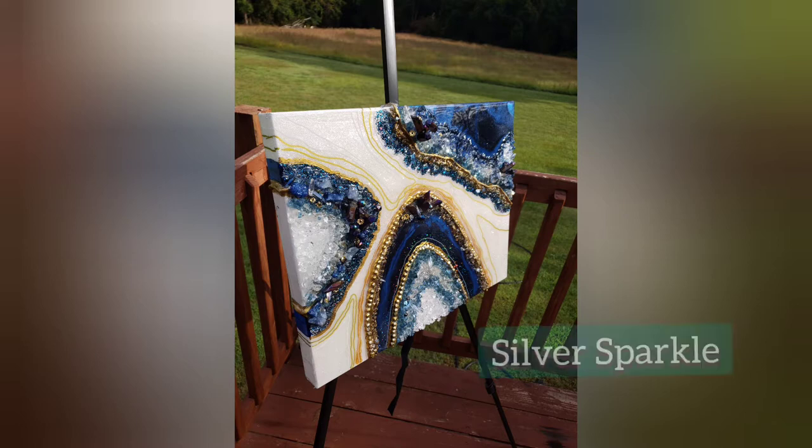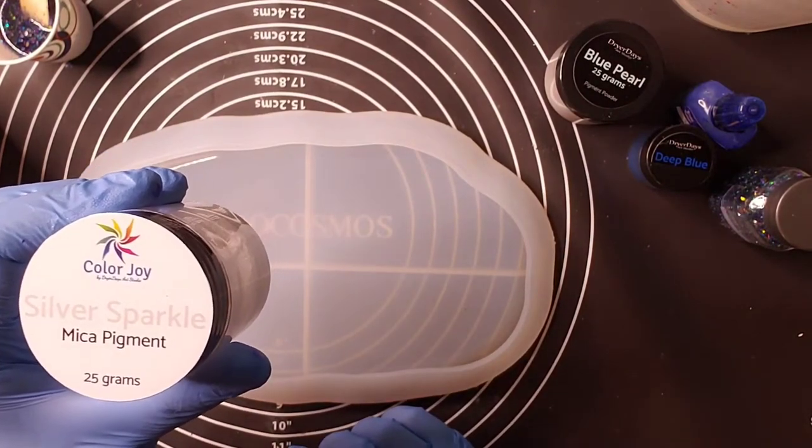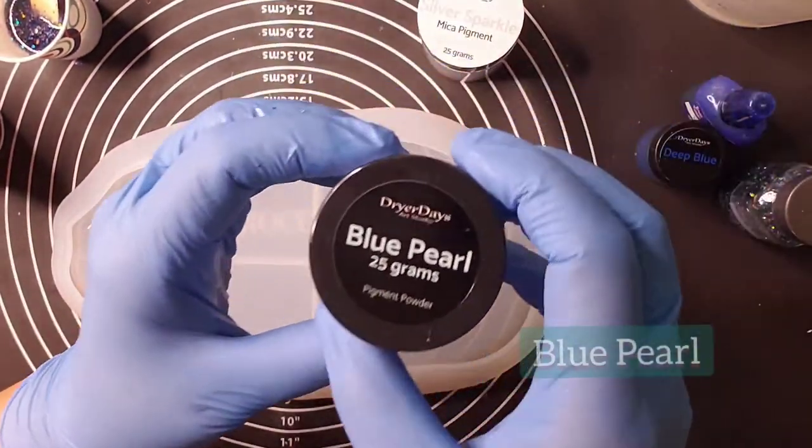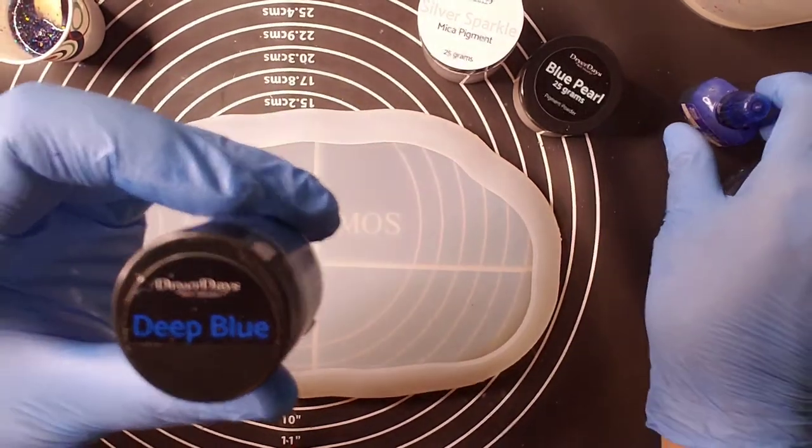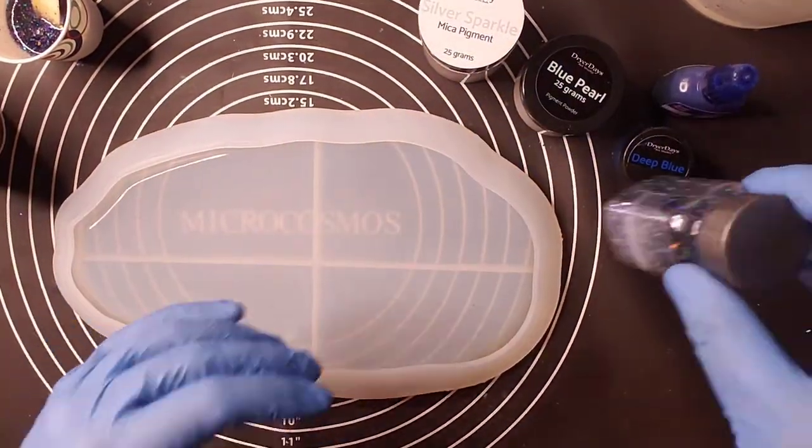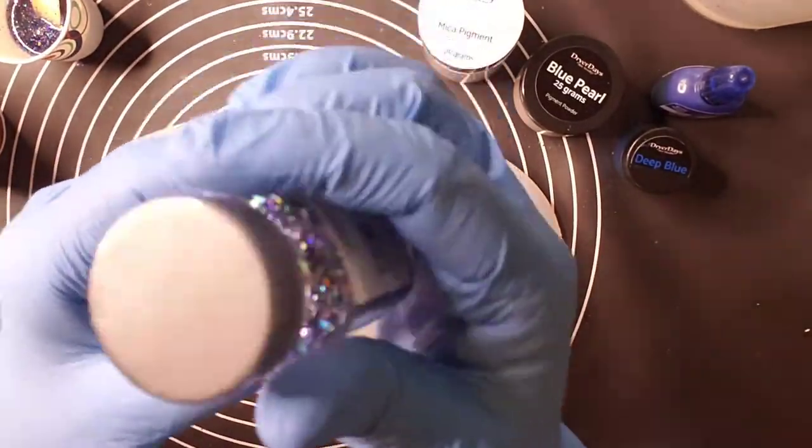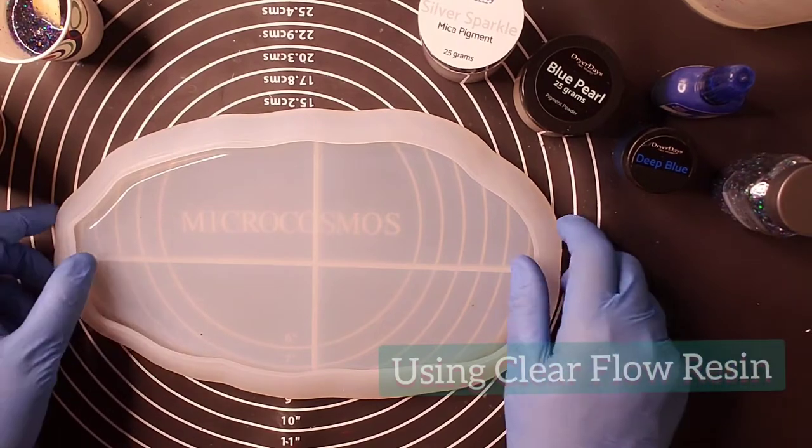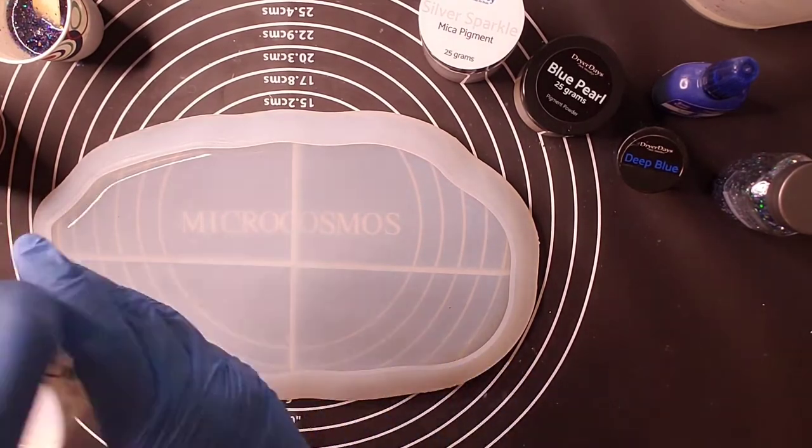Today I'm going to be working on this oval dish mold that I got from Dryer Days Art Studio. I'm going to be using one of their new pigments, the sparkle silver, and then the blue pearl. I love that pigment and the deep blue, which is very similar to a royal blue. I'm going to be adding just a little bit of my ultramarine to that and I'm going to be using Reflections Lagoon glitter on this piece. I've mixed up about 12 ounces of resin to do this and just to work on a few extra little projects, but this is my main piece today.